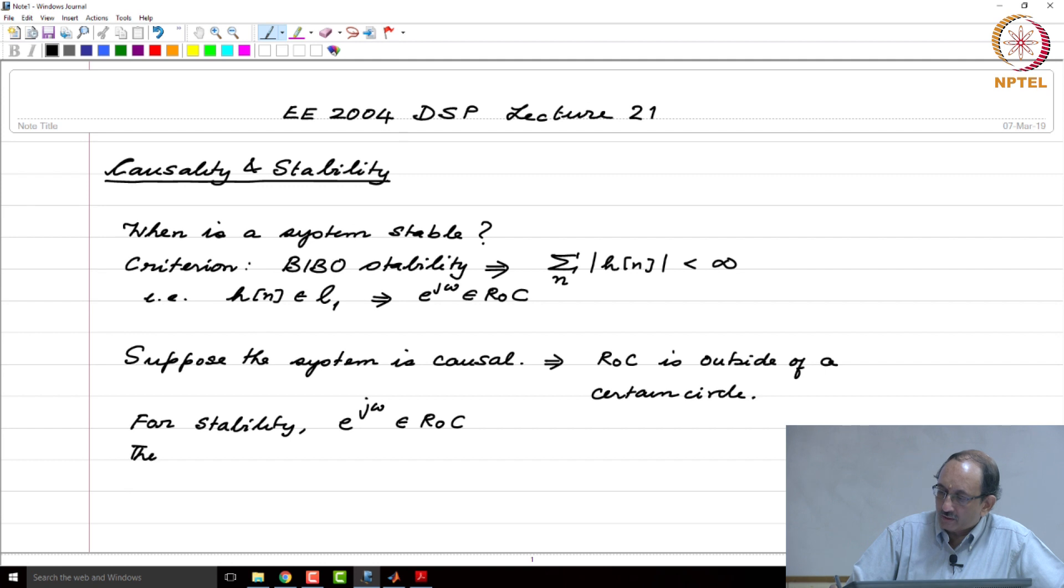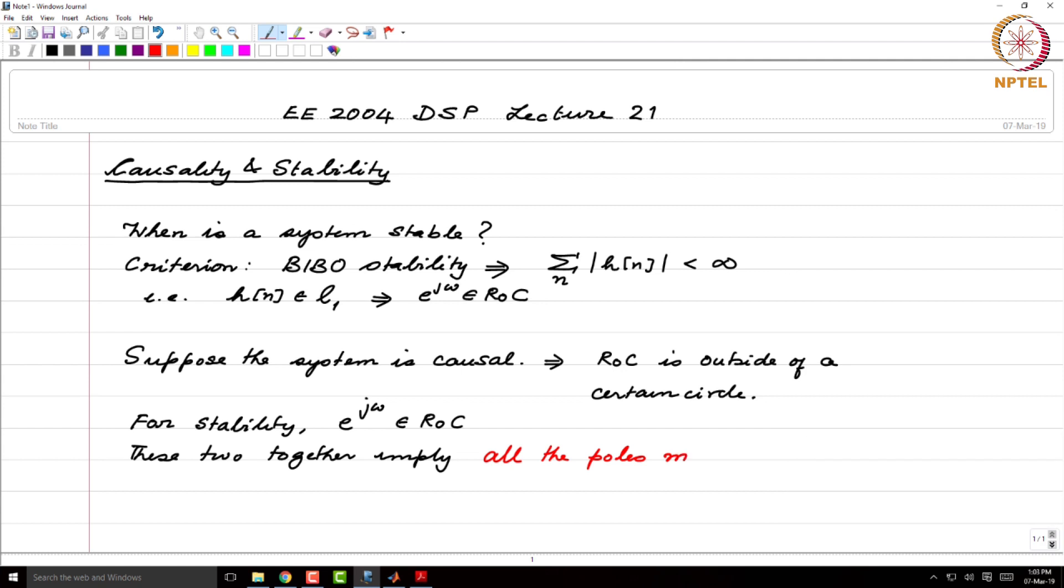These two together imply all the poles must lie strictly inside the unit circle.